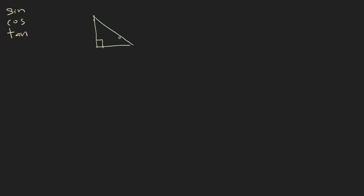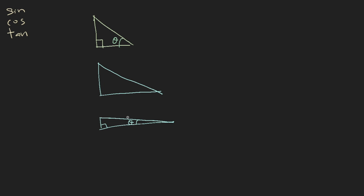Sine, cosine, and tangent simply mean the ratio of two of the sides. For example, the sine of an angle is the ratio of the opposite side over the longest side. The triangle can take many shapes — it can be bigger or very long — but it doesn't matter. Cosine is the ratio of the adjacent side over the hypotenuse, which is the longer side, and tangent is opposite over adjacent.